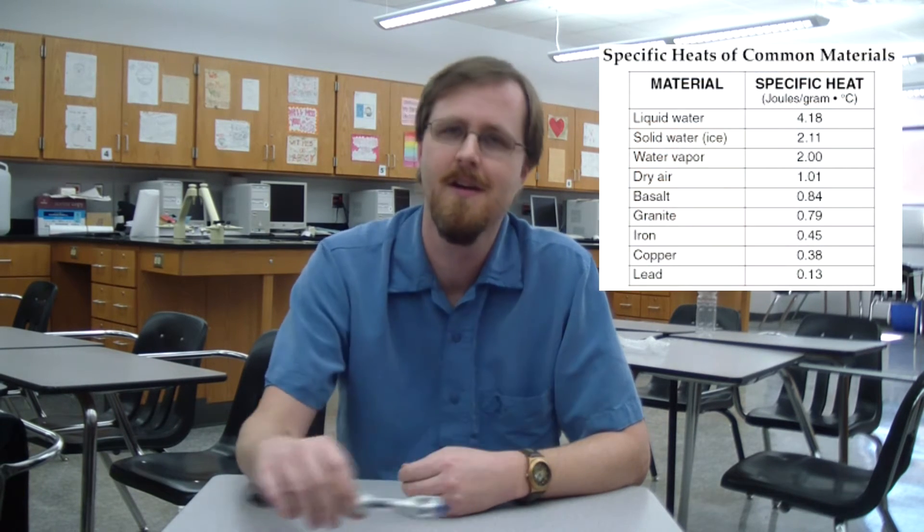So if we look at a specific heat chart like this, you can clearly see that water is right up top. It has the high specific heat of everything listed on this chart. And so it actually will absorb the most amount of energy per gram. Whereas all of your metals are right down there at the bottom like lead and copper. This should actually make a lot of sense that metals actually heat up very quickly and then cool off just as quickly.